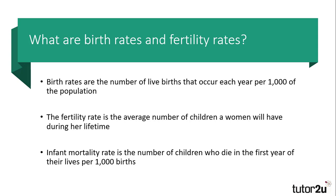Birth rates are the number of live births that occur in each year per 1,000 of the population. It seems obvious to state that the more people there are in a country, the more children there will be, so we have to calculate these so that we can compare from one society to the next. So instead of looking at the total numbers born, we divide the number of children by the size of the population, and this gives us a better idea of how much the population is expanding.